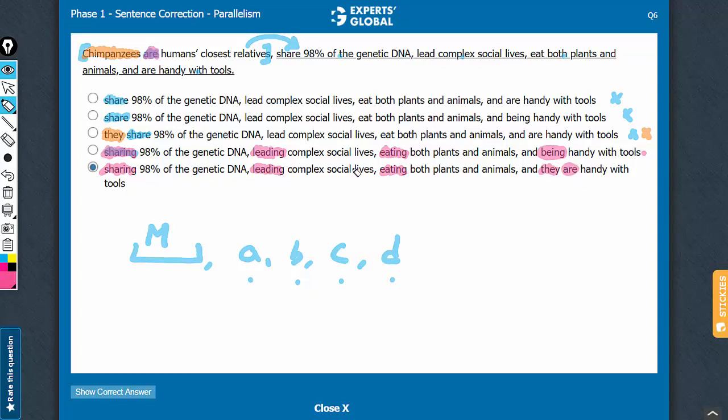Sharing, leading, eating are not parallel. Answer choice b says share, lead, eat, and then suddenly being. This being is incorrect because it is not parallel. This is a passive continuous verb, not parallel to other verbs here. So, another reason why b is incorrect.